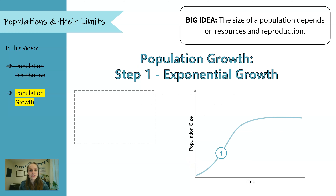Now we're going to talk about the general stages that we see when a population first establishes itself in an area and starts to grow. We'll look at this graph here — I have time on my x-axis and the size of the population on my y-axis. We're going to go through three stages.